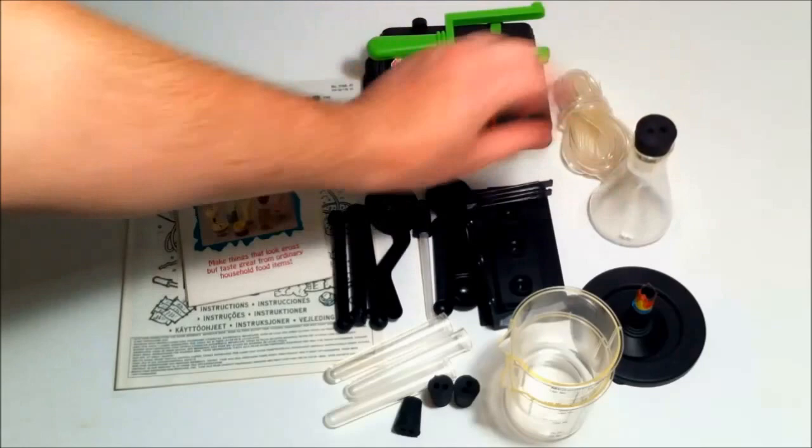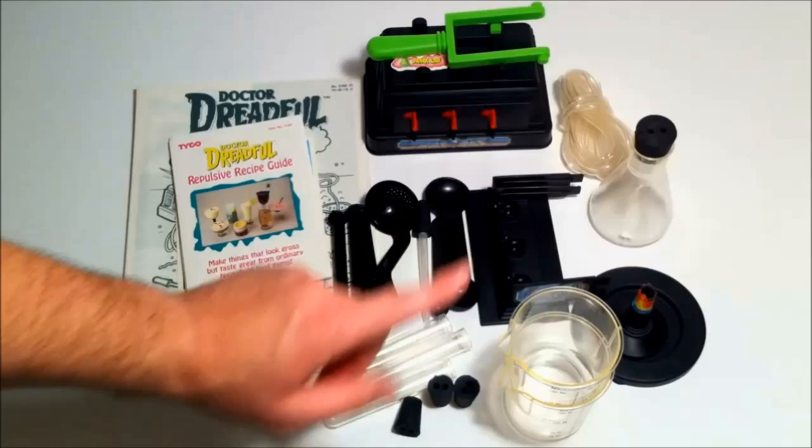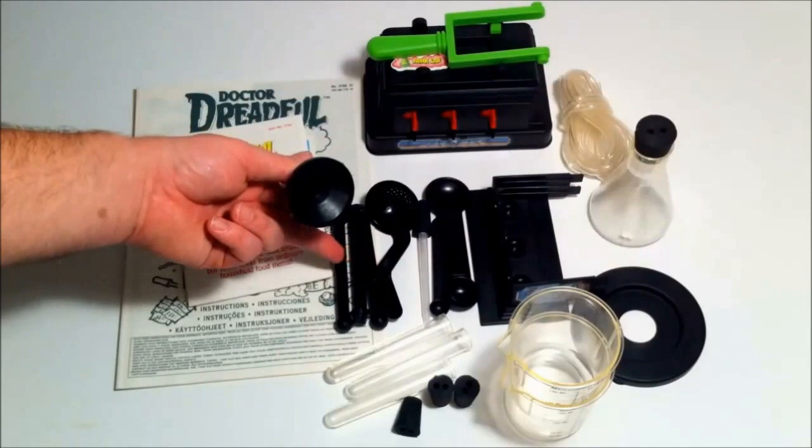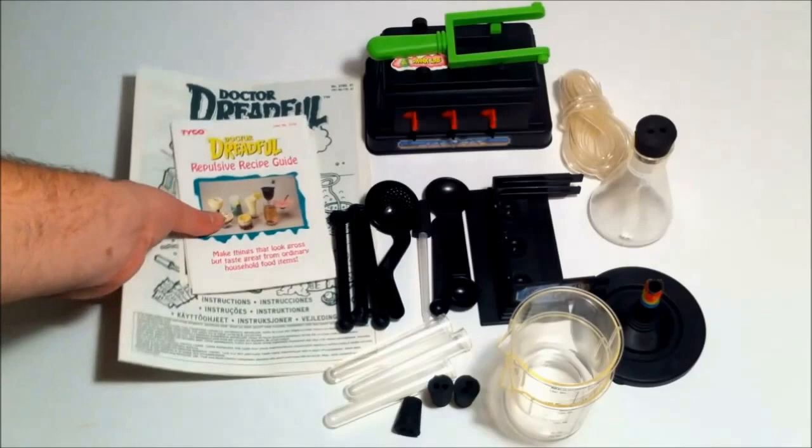We have our tubing, our flask, stopper that goes with it. This is a test tube rack. We have our measuring spoons, eyedropper, strainer, this little burner thing, and this is the stand and the legs for it. That's what your flask sits on top of.